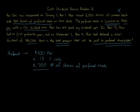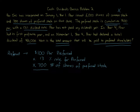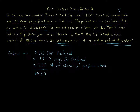Take the par amount for the preferred — note there's also a par for common, so don't mix those up, as they can be different. Preferred is almost always a larger par amount and usually costs more per share. Multiply the par by the percentage rate for preferred stock, then multiply by the number of shares of preferred stock. So we do: $100 times 13% (which is 0.13) times 700, and we get $9,100. That is the maximum dividend amount for preferred shareholders each year.